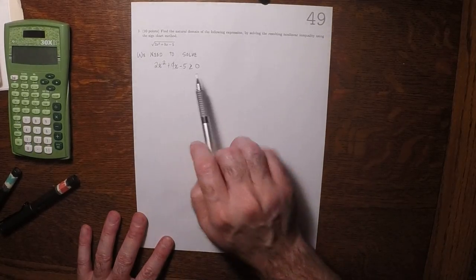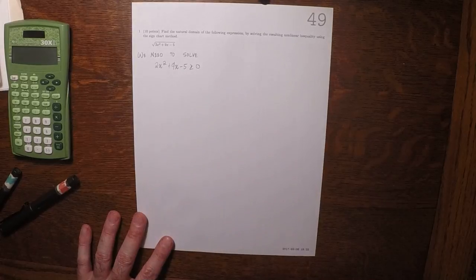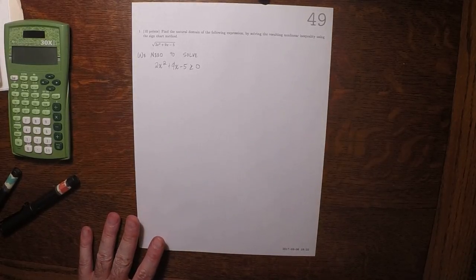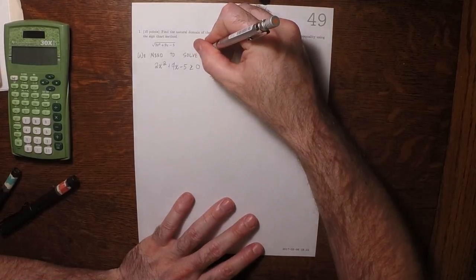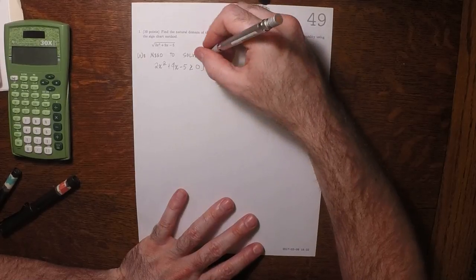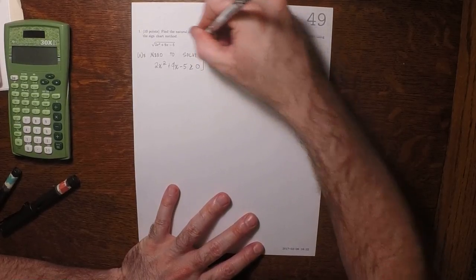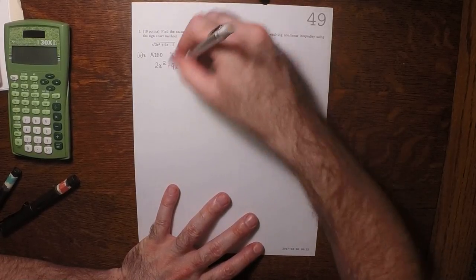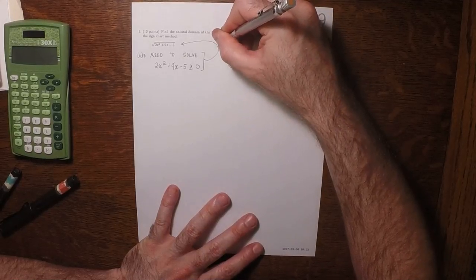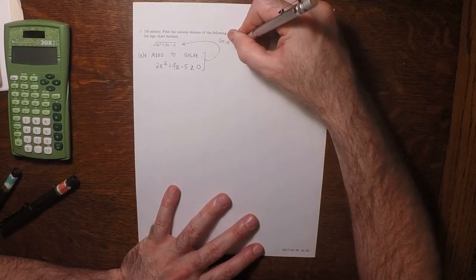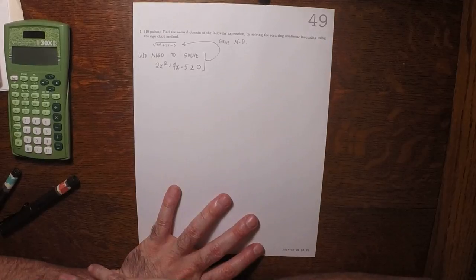Because when that inequality is true, that's the natural domain of the original expression. So solving that will give the natural domain we're looking for.